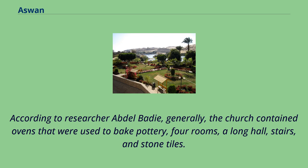According to researcher Abdel Badi, the church contained ovens that were used to bake pottery, four rooms, a long hall, stairs, and stone tiles.